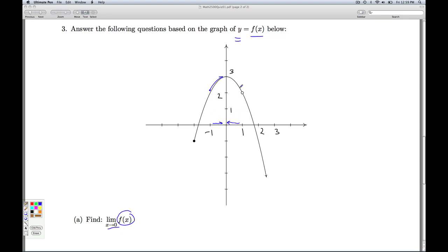So if I do that, I'm traveling up the curve. And so what's happening to those y values? Those y values are heading up to y equals 3. And so for part a, the limit then is 3.